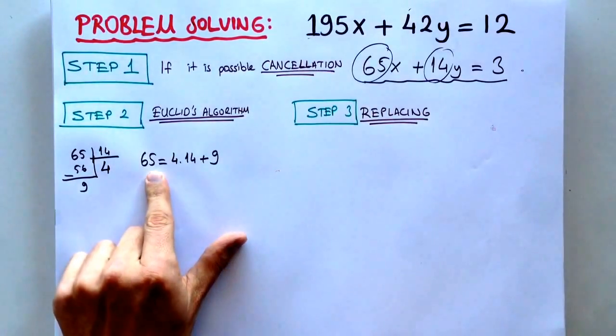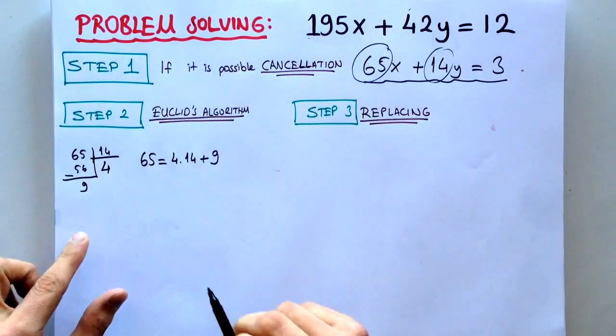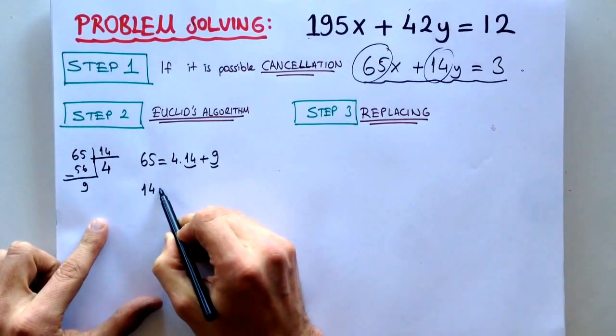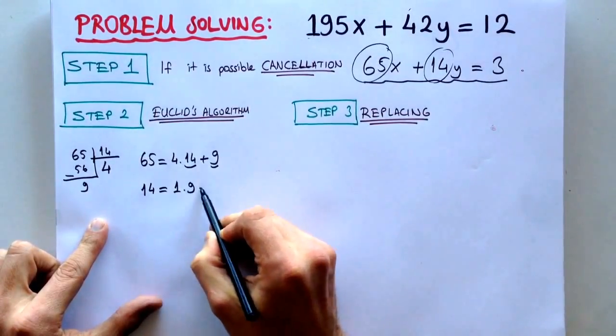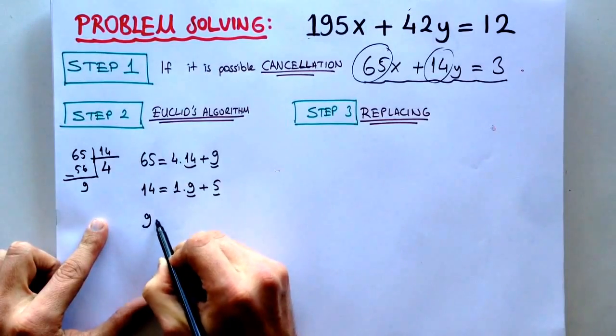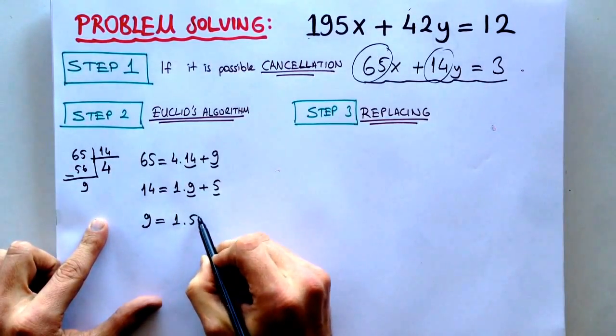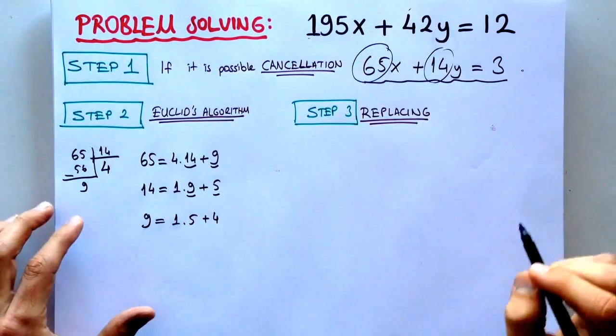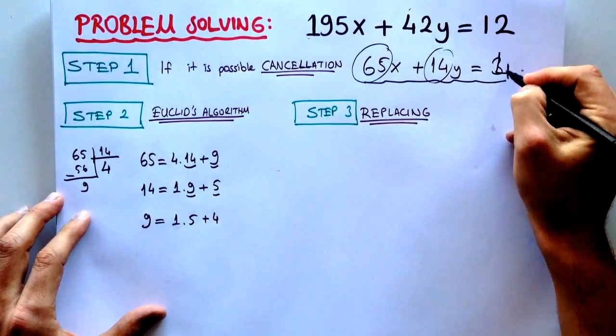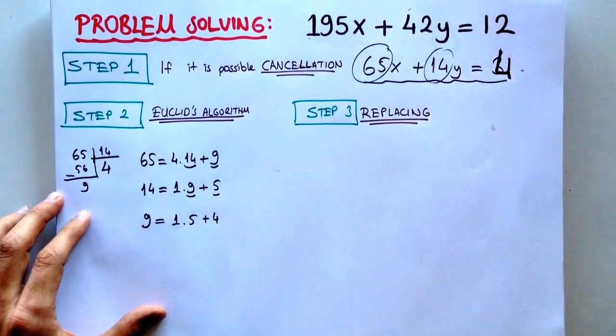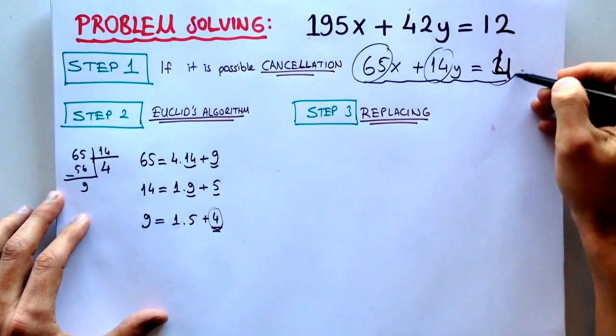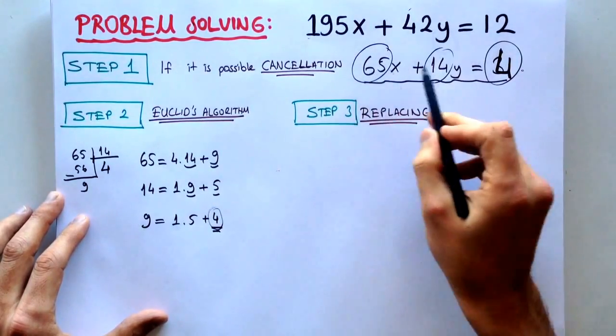we apply the Euclidean algorithm now. If we do that several times with the quotient and the remainder again, 14 is equal to 1 times 9 plus 5. If we do that again with the quotient and the remainder, 9 is equal to 1 times 5 plus 4. We did the cancellation with 3, and we have to find this 4. If we result in 4, we have to stop.